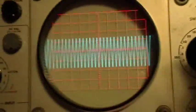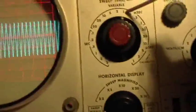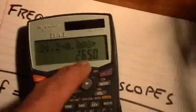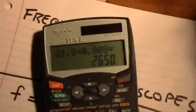So now let's do some math. We know that we have 21.2 cycles in 8 milliseconds. Moving to the calculator, we go 21.2, which is the number of cycles, divided by 0.008, which is eight milliseconds, the time interval. And that gives us 2650 Hertz or cycles per second.